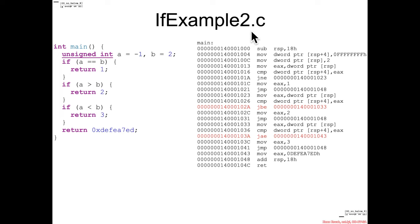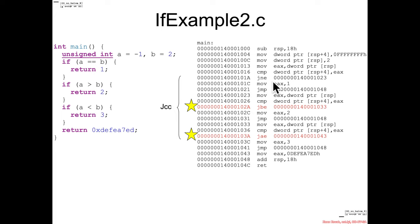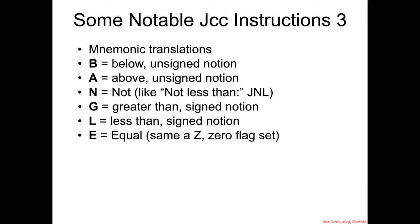In if example 2, the only substantive thing we've changed is that instead of a signed integer, we are now using an unsigned integer. The net result in our assembly is we see some new jump conditional codes — we see 'below' and 'above' instead of 'less than' and 'greater than'. There's still a JE, but we've seen that before. Below and above are the unsigned notion, so that makes sense — we just declared an unsigned integer instead of a signed integer for our comparisons.